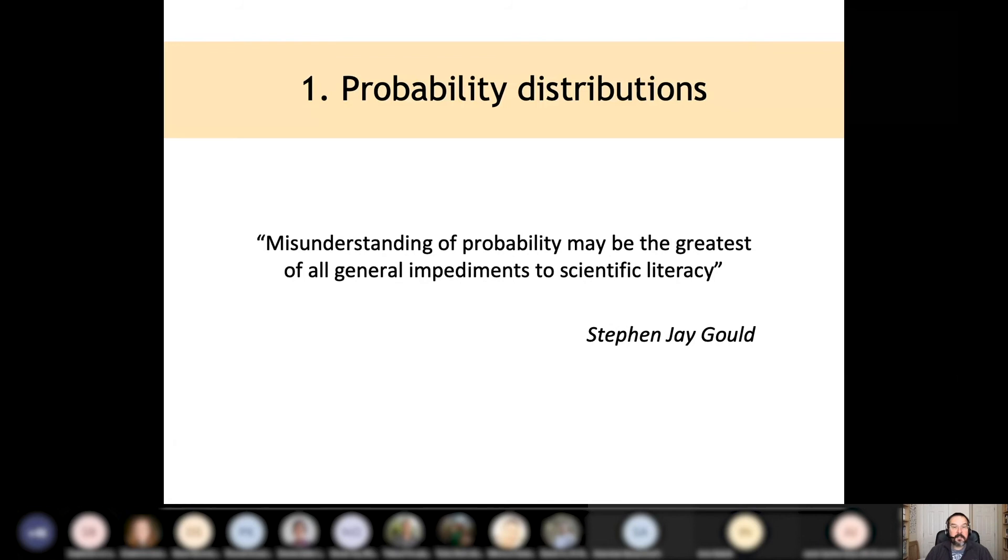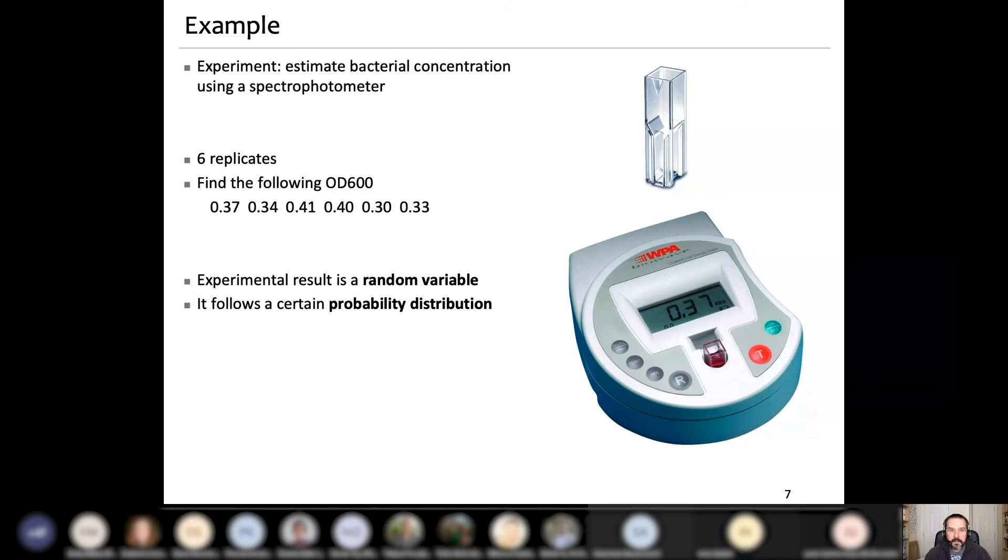Today, probability distributions. And I will start with this quote from Stephen Jay Gould. Misunderstanding of probability might be the greatest of all general impediments to scientific literacy. Take this to heart. Understanding of probability and statistics is quite important, not only in science, but also in everyday life. Understanding all the COVID data that is flooding us through the media. Without basic understanding of statistics, you might misinterpret many things, as some journalists do, for example.